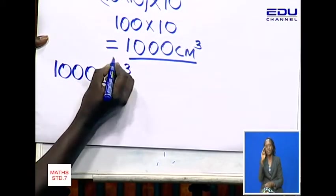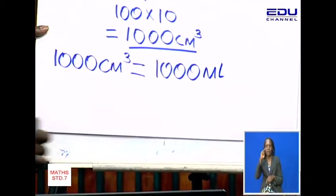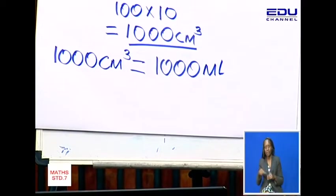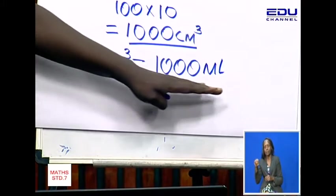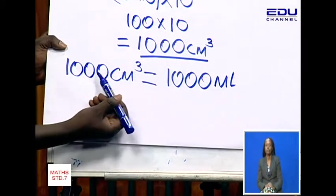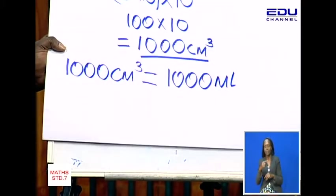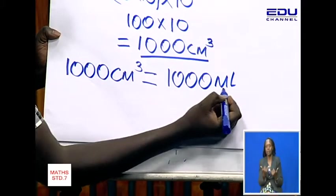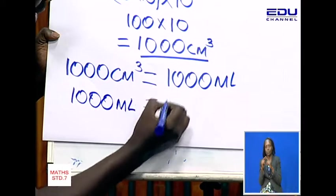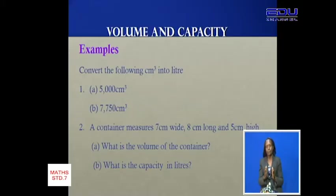...is equivalent to one thousand milliliters. So one thousand cubic centimeters is equivalent to a thousand milliliters — a thousand milliliters is in liquid form. That is what I want you to see: this solid 1000 cubic centimeters is equivalent to 1000 ml in liquid form. Now these 1000 ml is also equivalent to one liter.